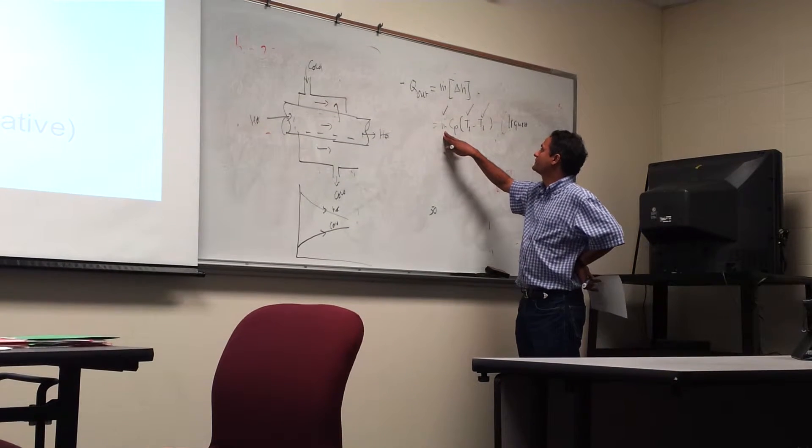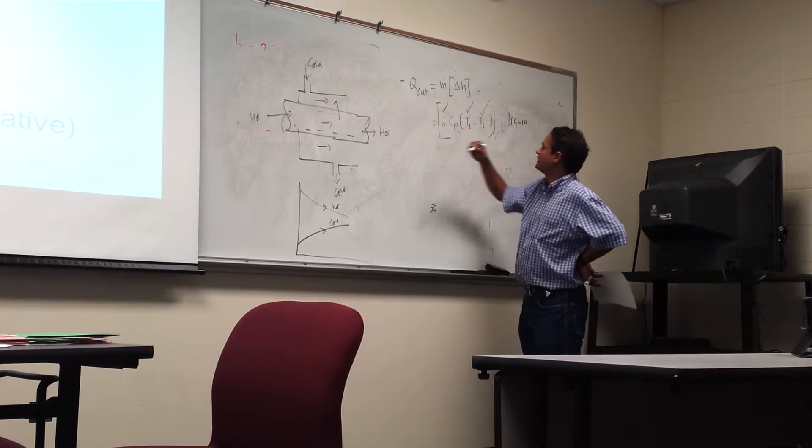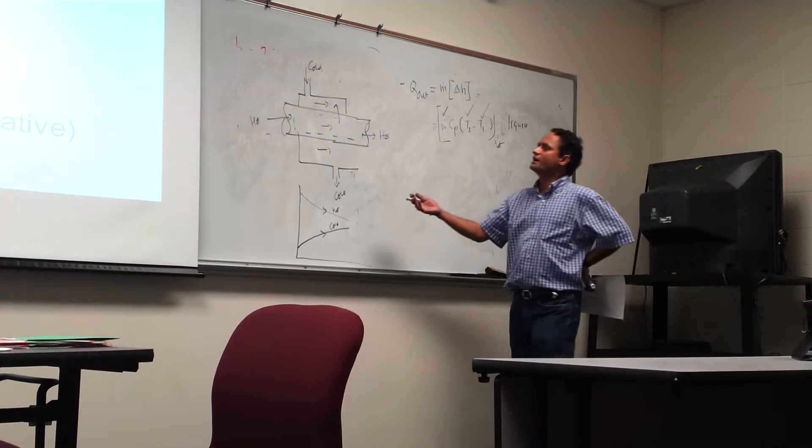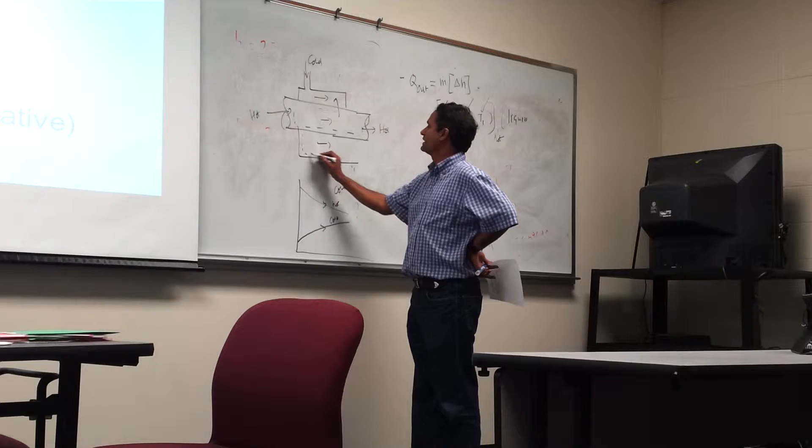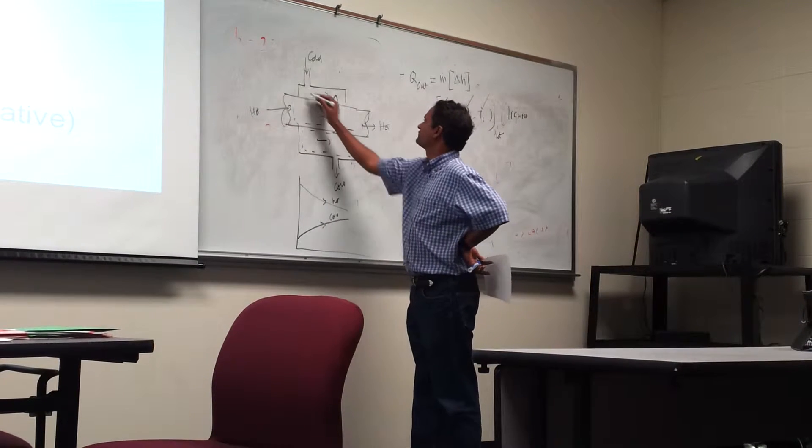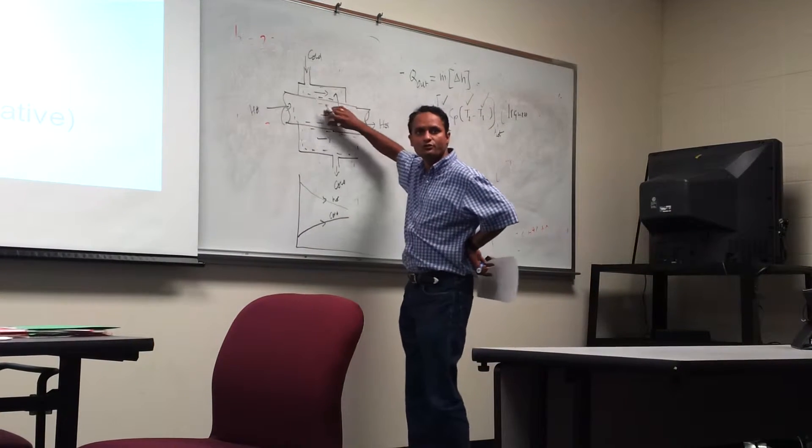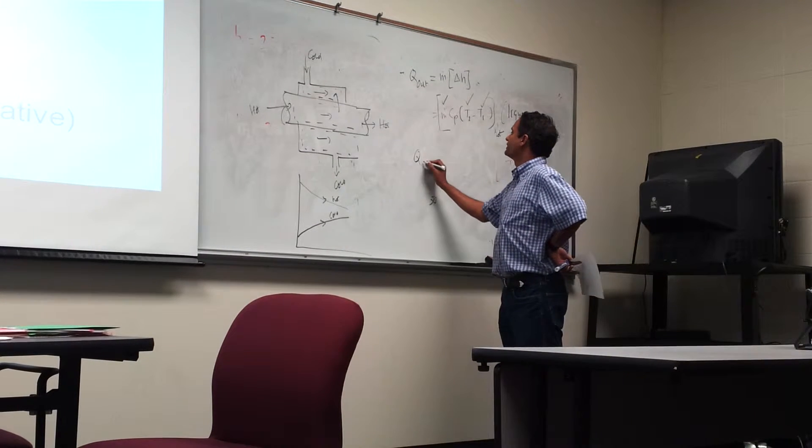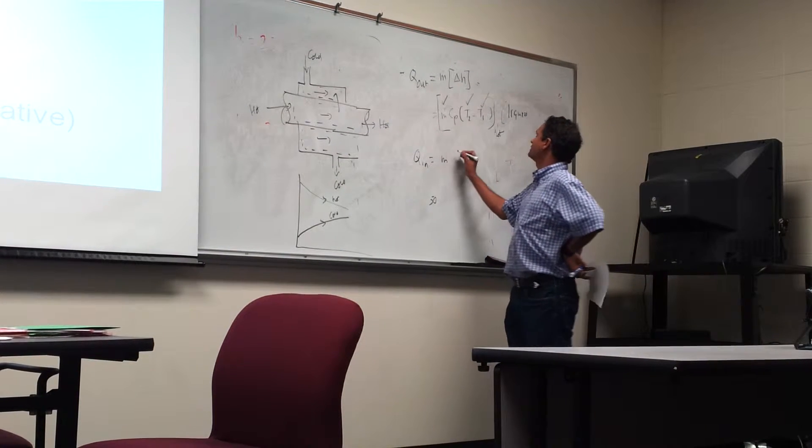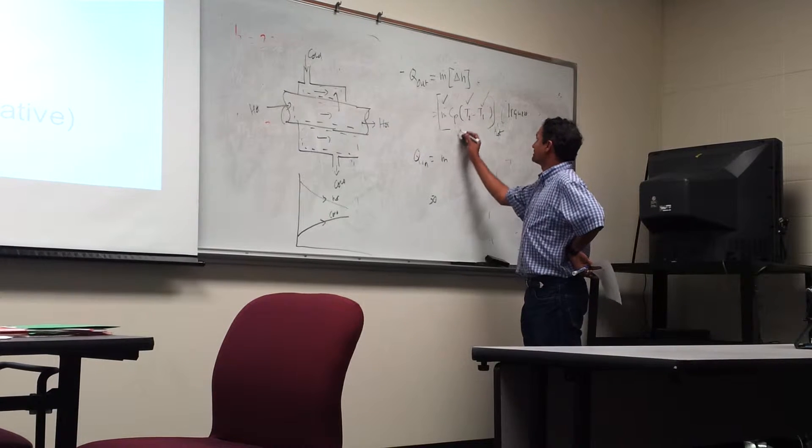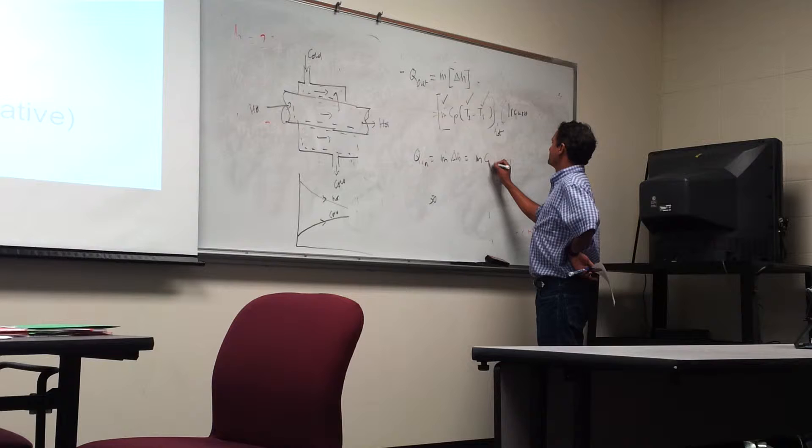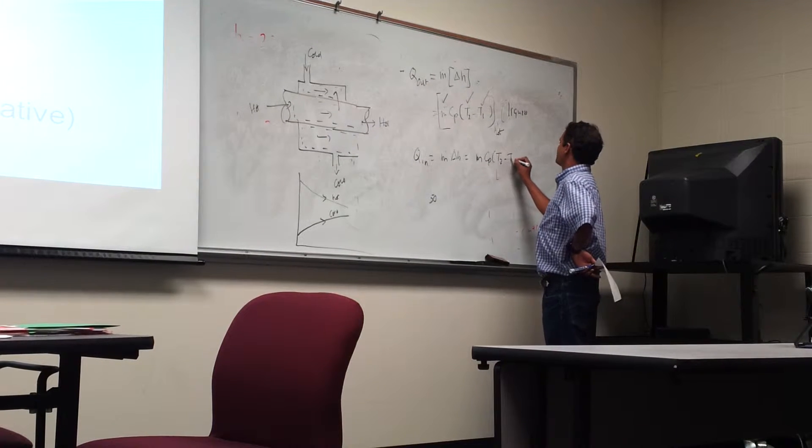So, mass flow rate, let's say we are doing now for hot, right? Now, if the same law we apply instead of the hot, if I apply for the cold, just excluding this, now Q in. So, Q in is equal to M dot delta H, which is M dot CP T2 minus T1.